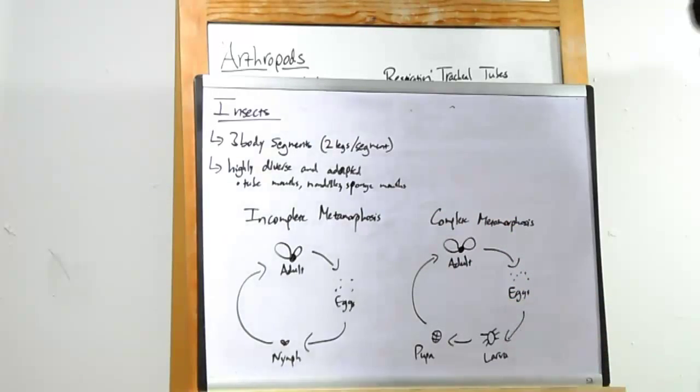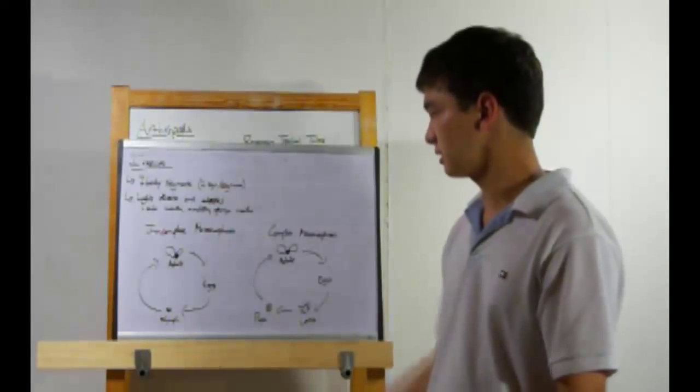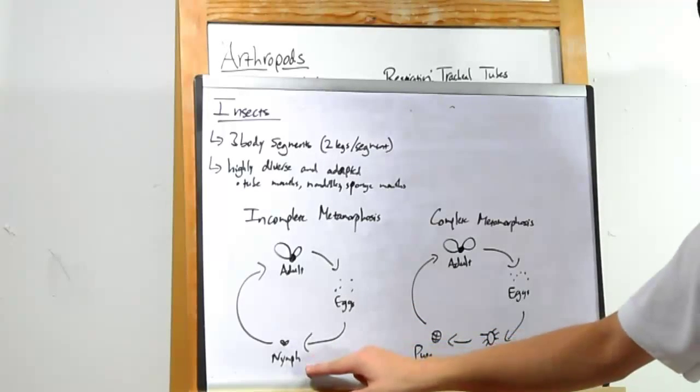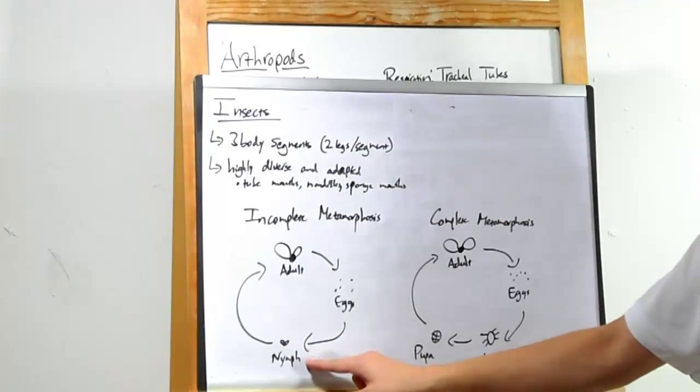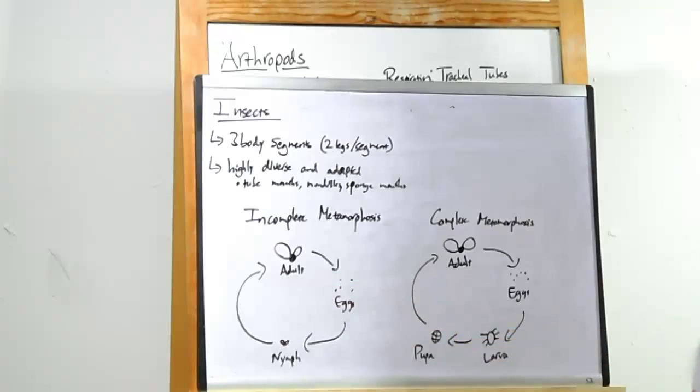Incomplete and complete metamorphosis. In incomplete metamorphosis, an adult lays eggs. The eggs will hatch into nymphs. Nymphs look like adults. They're just smaller. The nymphs then mature into adults. Simple enough.